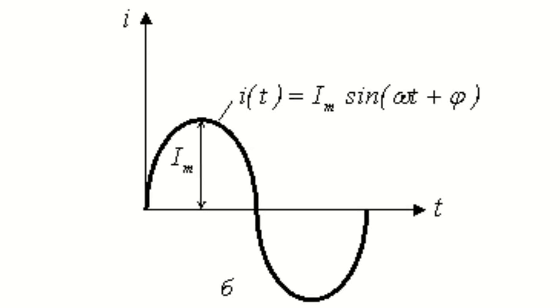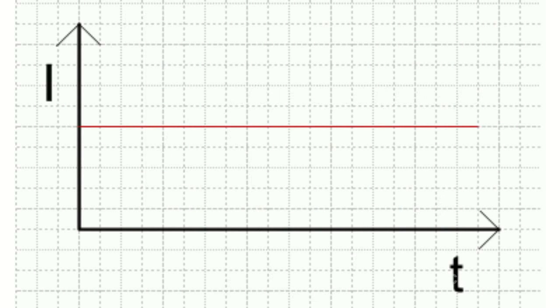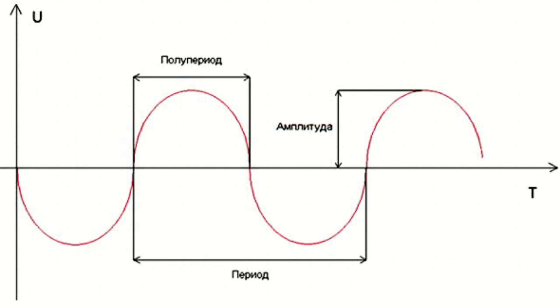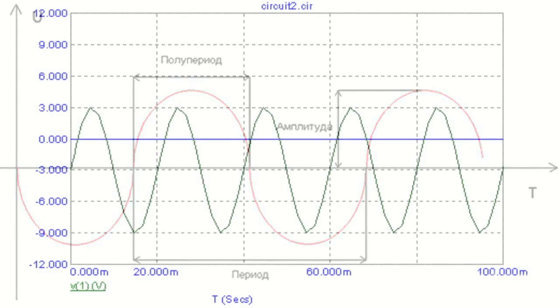Direct current is current whose direction and magnitude varies little over time. Alternating current is electrical current that periodically changes its magnitude and direction.